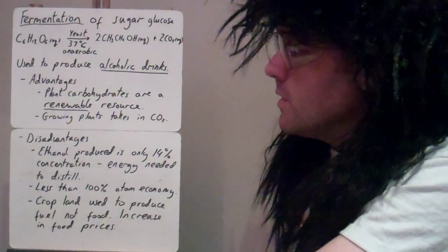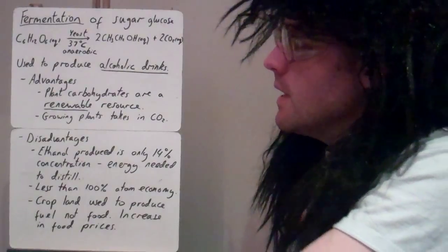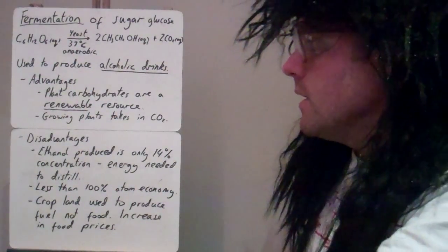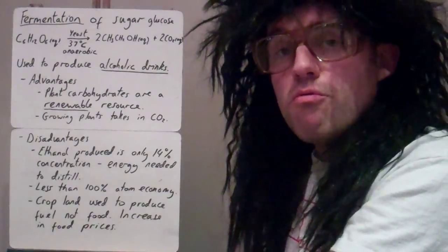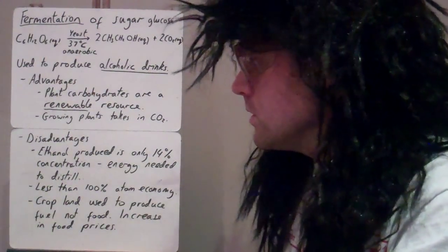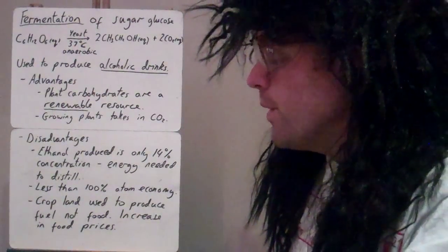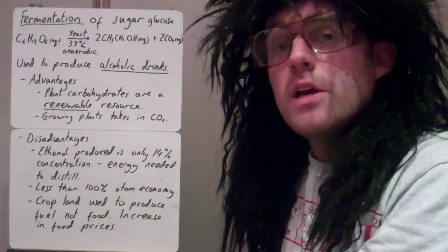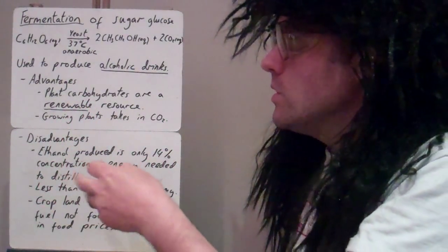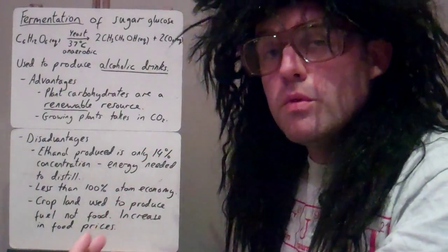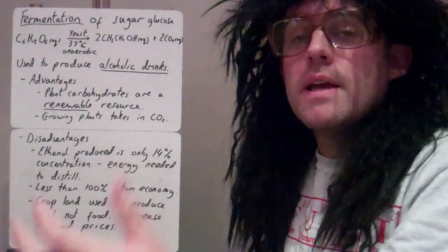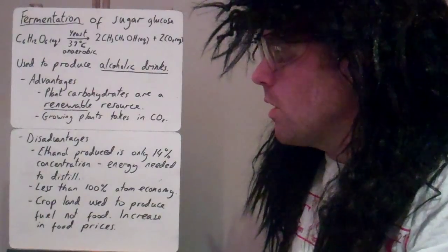An advantage of this process is that the glucose comes from plant carbohydrates. Because plants are a renewable resource, if we need more we can just grow more plants. When plants grow, they take in CO2, so if you use ethanol for combustion and CO2 is produced, some of it would be taken in by the plants as they grow.